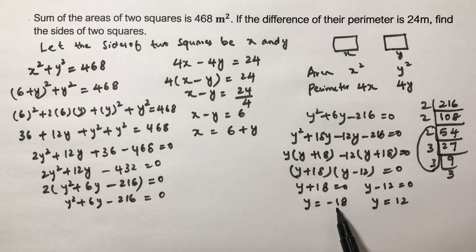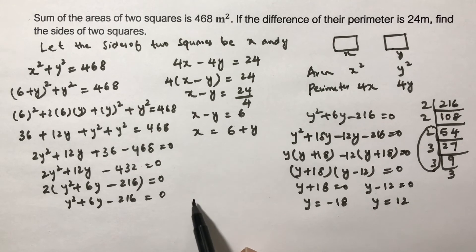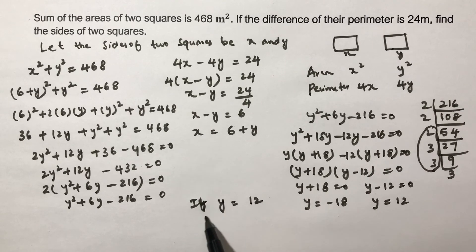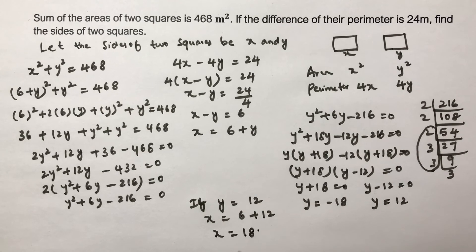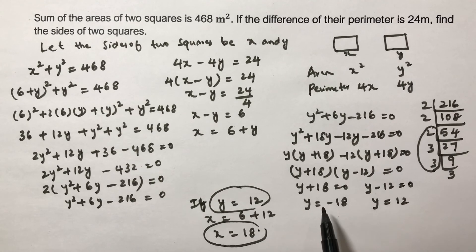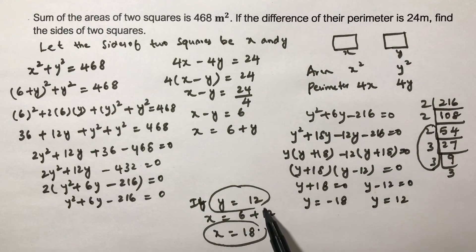Since the side of a square cannot be negative, y = 12. Substituting back, x = 6 + 12 = 18. Therefore the sides of the two squares are 12 meters and 18 meters.